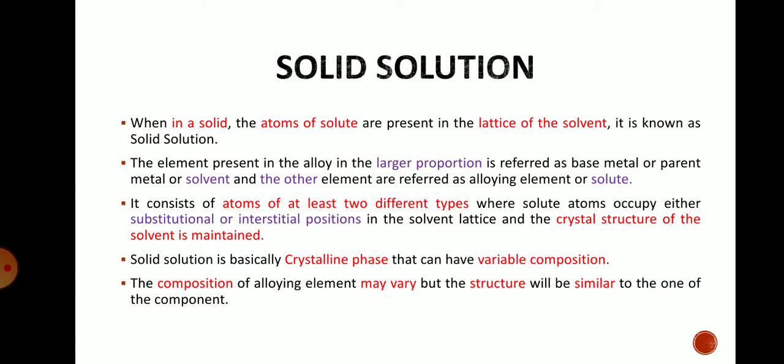A solid solution is basically a crystalline phase that can have variable composition. Generally, alloys have two different kinds of phases: a solid solution phase, or a compound phase (also called an intermetallic phase). We are looking at the solid solution phase in detail. The composition of the alloying element may vary, but the structure will be similar to one of the components.